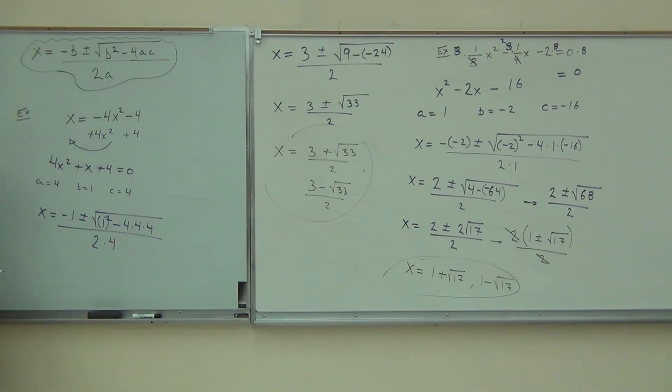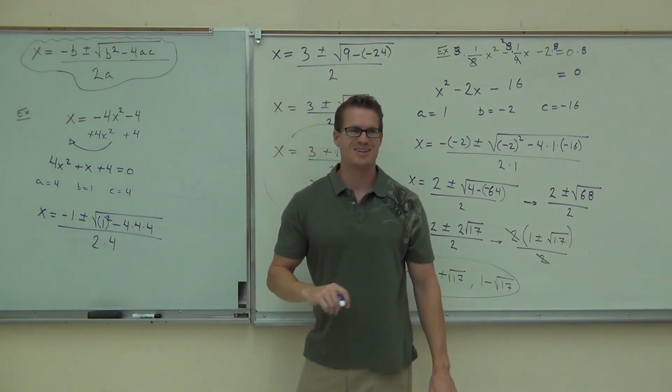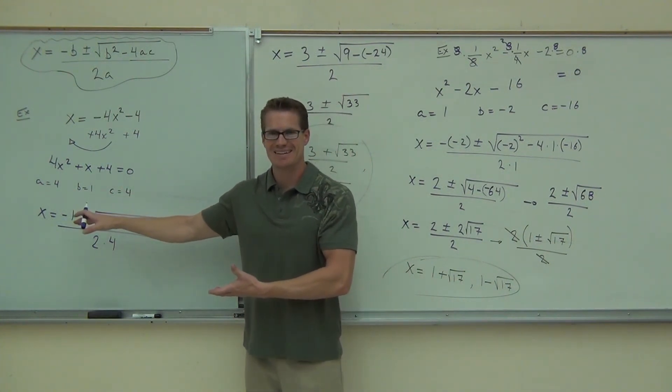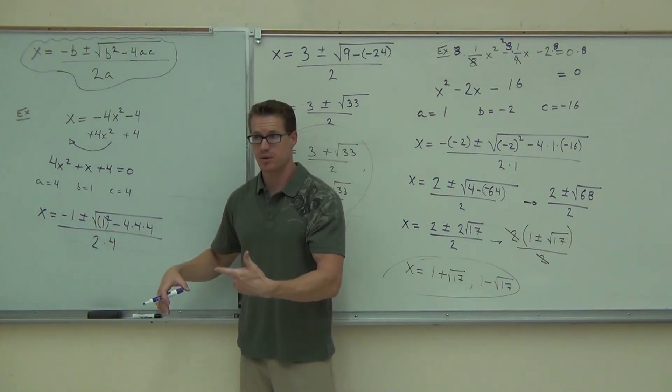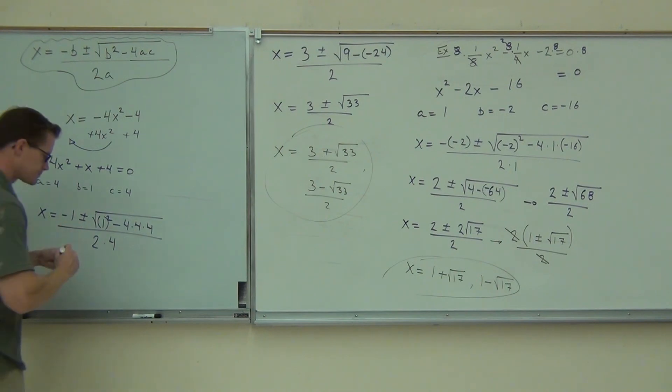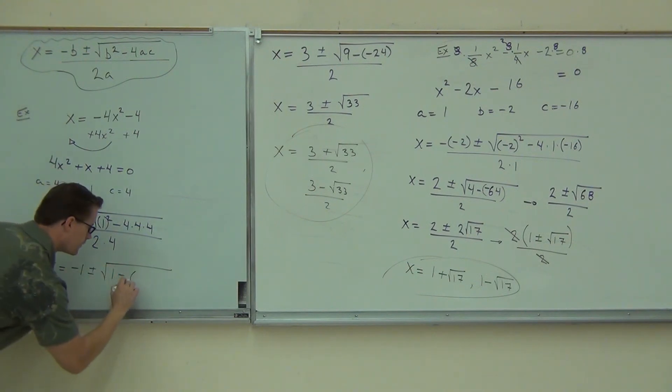You got the song. How about that? Are you okay on getting that? This should be kind of a routine at this point. Plug them in correctly. I just need you to see what happens on this one example. You're going to get negative 1 plus or minus the square root of 1 squared gives you 1 minus 4 times 4 times 4 is 64. All over 8.